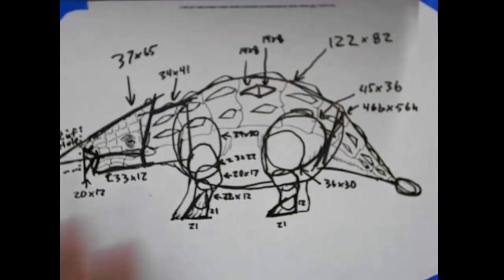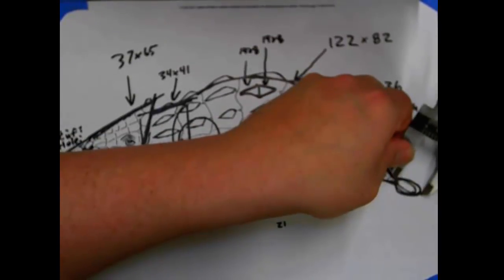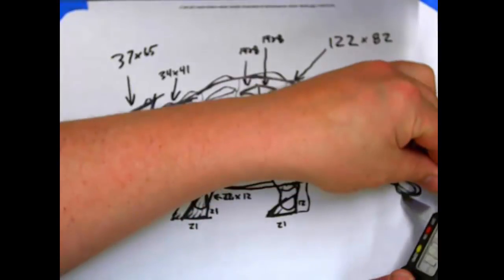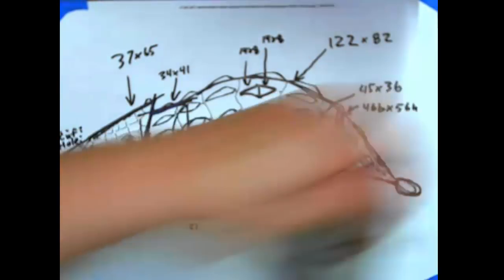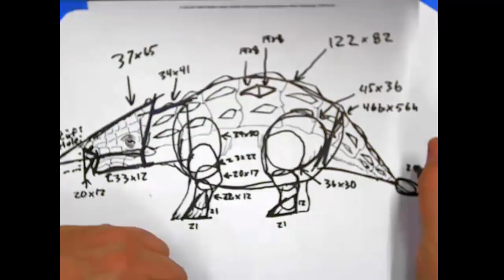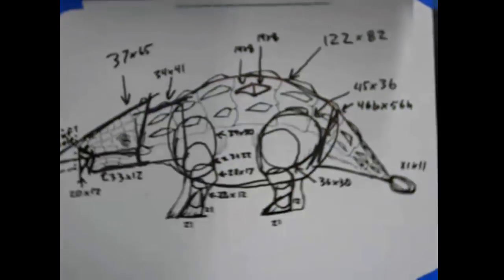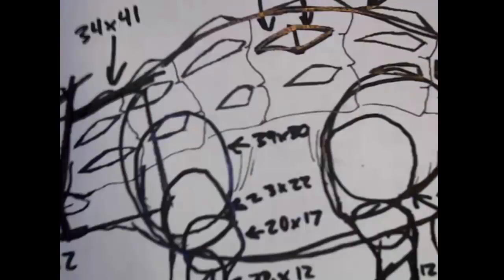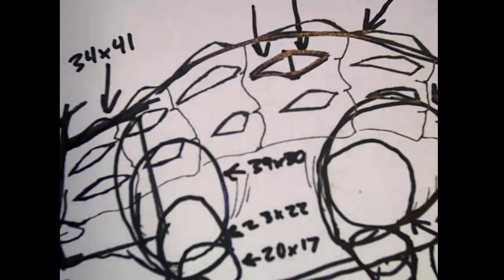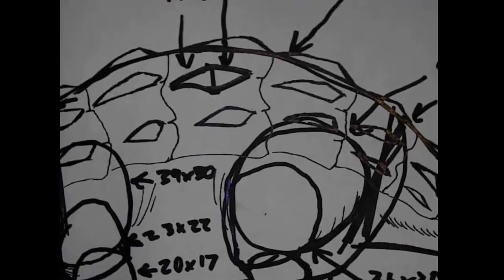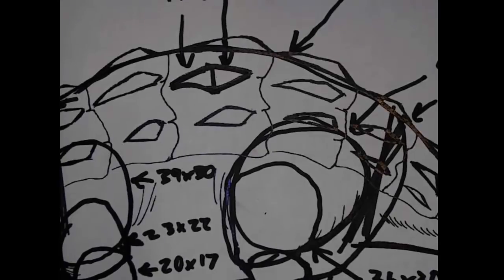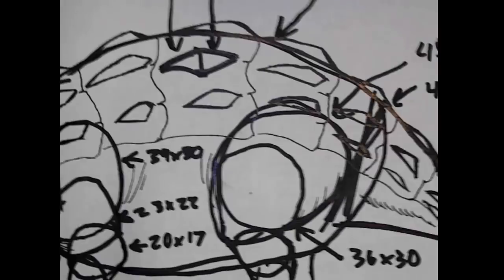We're back and I've finished dimensioning the drawing. I noticed I missed one oval at the end — it's 21 by about 11 millimeters. I'll zoom in the camera now and refocus it so you can see what we've been doing in a little bit more detail.